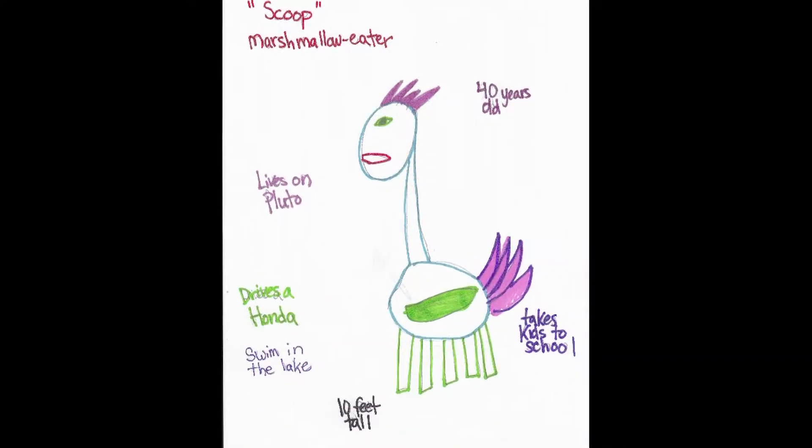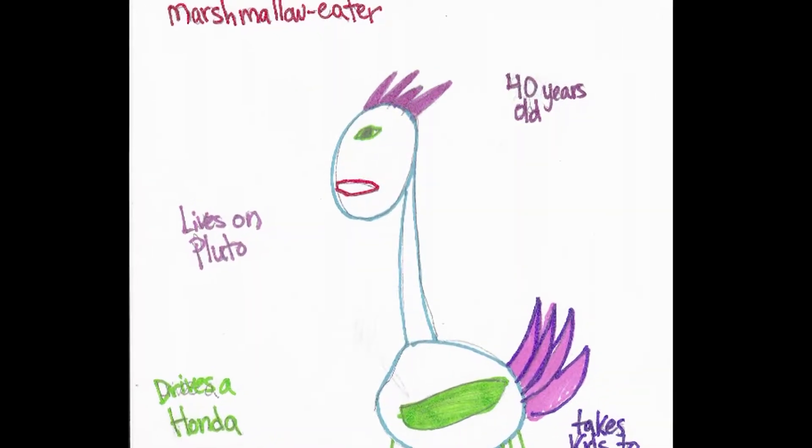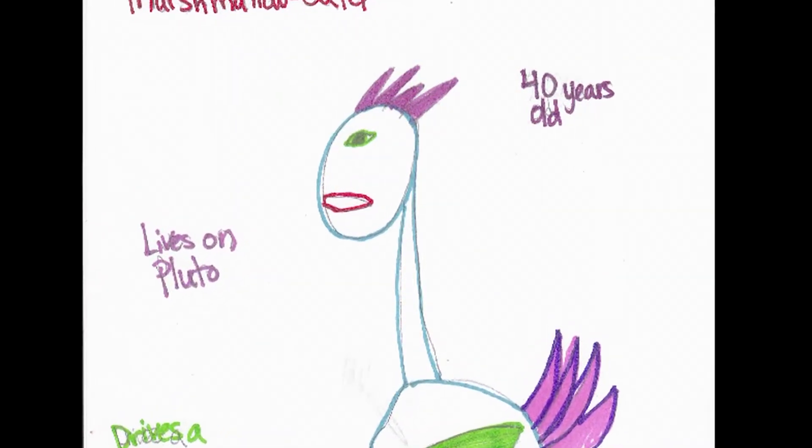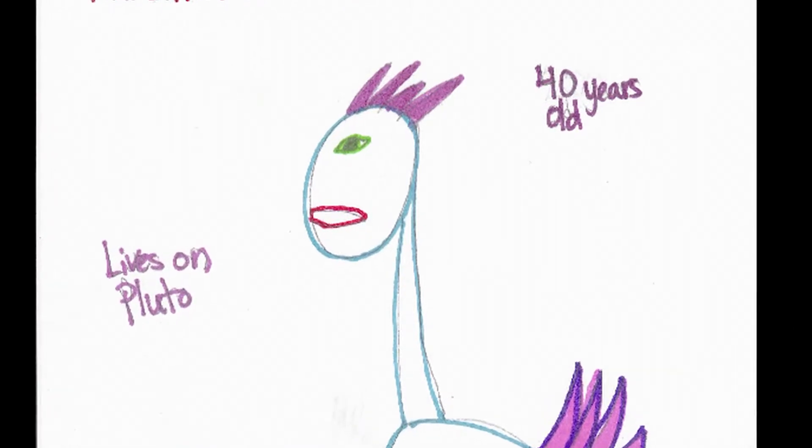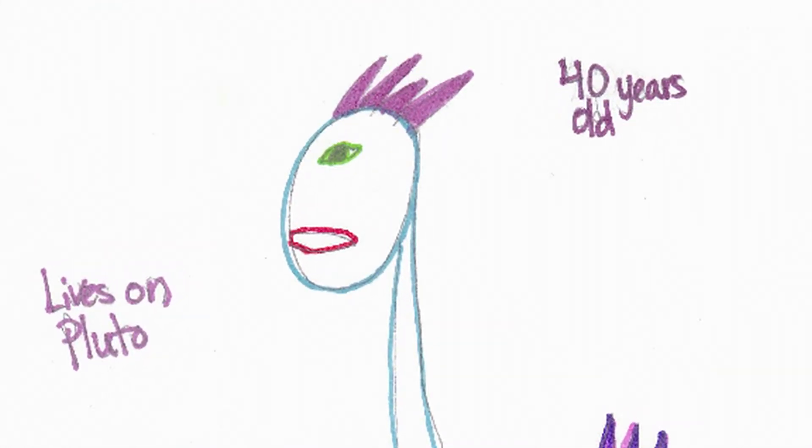This is a number nine. I just feel it. Scoop the marshmallow eater. 40 years old, lives on Pluto, drives a Honda, and likes to swim in the lake. He's only ten feet tall. And he takes kids to school.